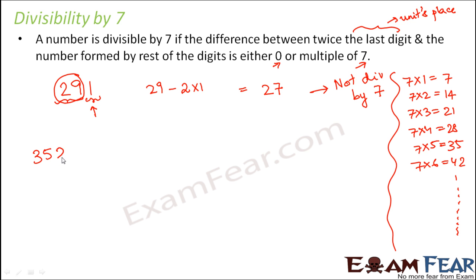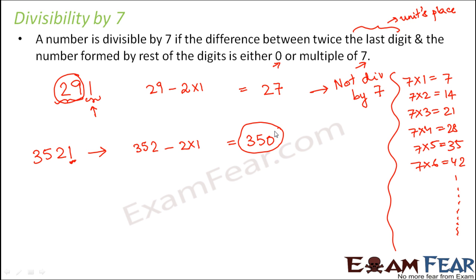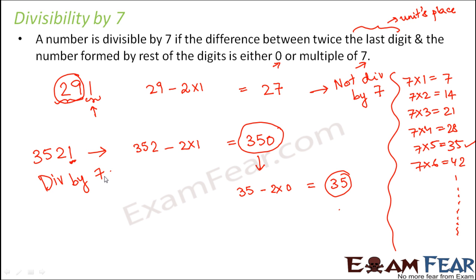Let us try another example: the number 3521. Take the last digit 1, multiply by 2 to get 2, and subtract from the remaining number 352, giving 350. Since 350 is still large, we repeat: the last digit is 0, twice that is 0, subtract from 35 to get 35. Since 35 is divisible by 7, the number 3521 is divisible by 7.